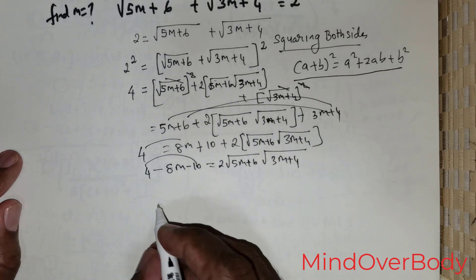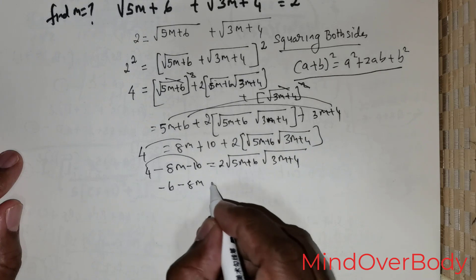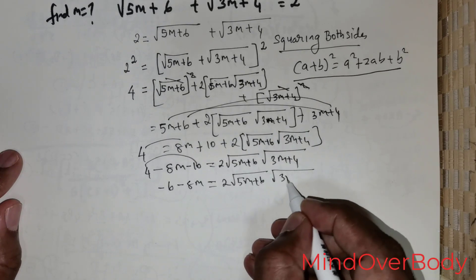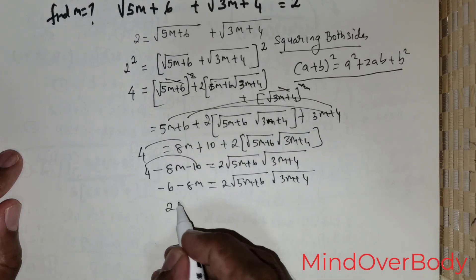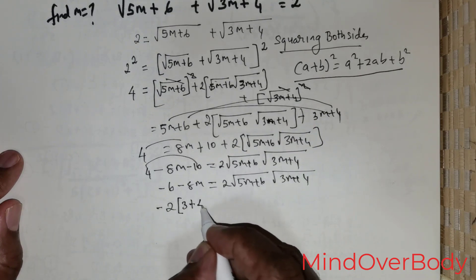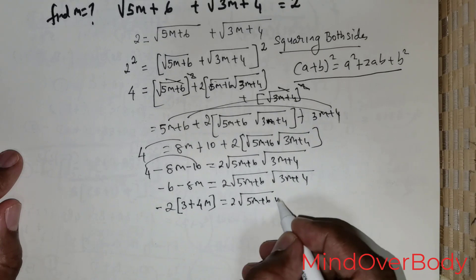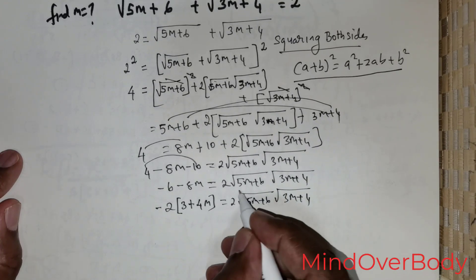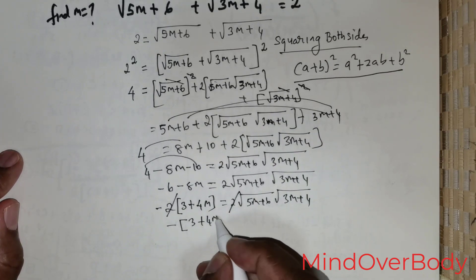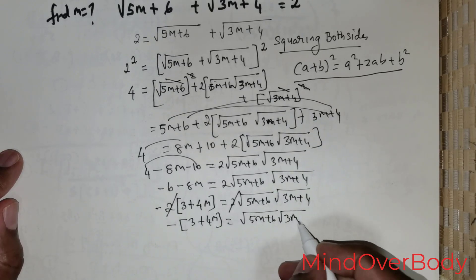Now 4 plus negative 10 gives me negative 6, so negative 6 minus 8m equals 2 times root of (5m plus 6) times root of (3m plus 4). I can factor out a 2 and a negative sign, giving me 2 times (3 plus 4m) equals 2 times root of (5m plus 6) times root of (3m plus 4). The 2's cancel, giving me negative of (3 plus 4m) equals root of (5m plus 6) times root of (3m plus 4).